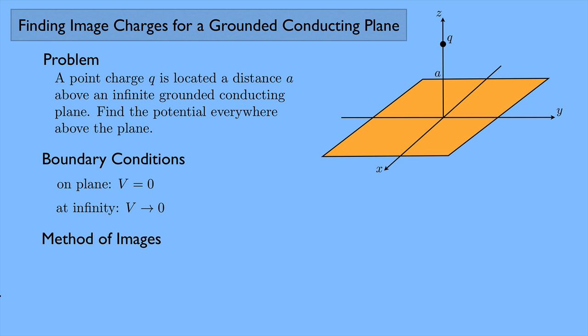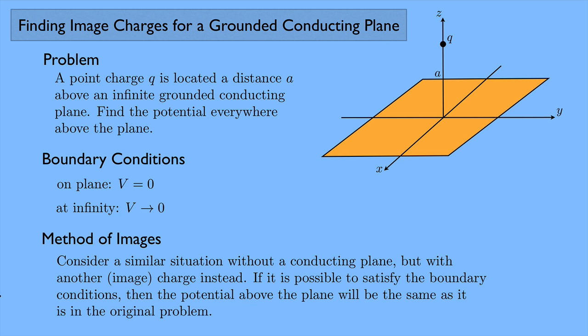Here's the method of images: consider a similar situation without a conducting plane, but with another charge — we'll call it an image charge instead. If it is possible to satisfy the boundary conditions, then the potential above the plane will be the same as it is in the original problem. We're going to get rid of the conducting plane, put another charge somewhere else, and if we can get the potential to match these boundary conditions above the plane, that has to be the right potential.